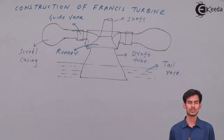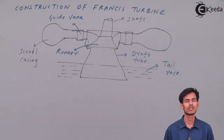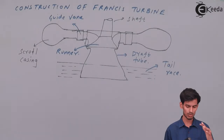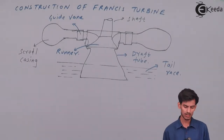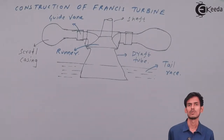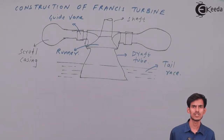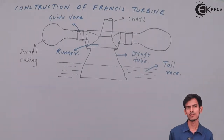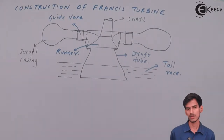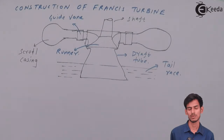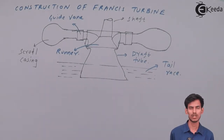The guide vanes are made of aerofoil shape so there are no losses. Once water enters the runner, it generates power, and then the remaining water passes through the draft tube into the tail race. The draft tube is very useful in Francis turbine because when water comes out of the runner, it has some kinetic energy and the pressure is generally below atmospheric pressure, creating chances of cavitation — bubbles and flow separations. The draft tube is a diverging tube, so as water flows down, the pressure increases, which prevents cavitation and separation.